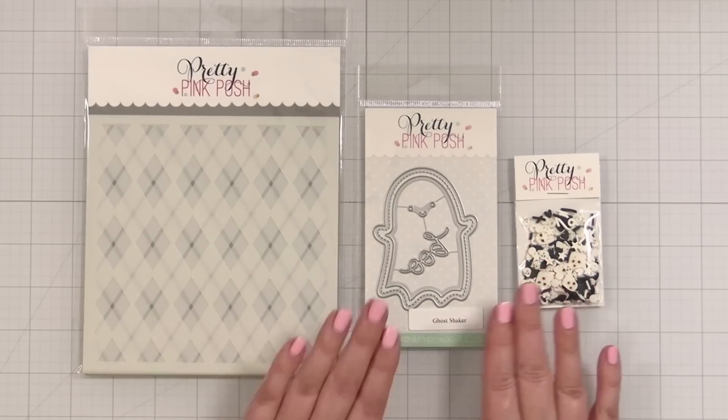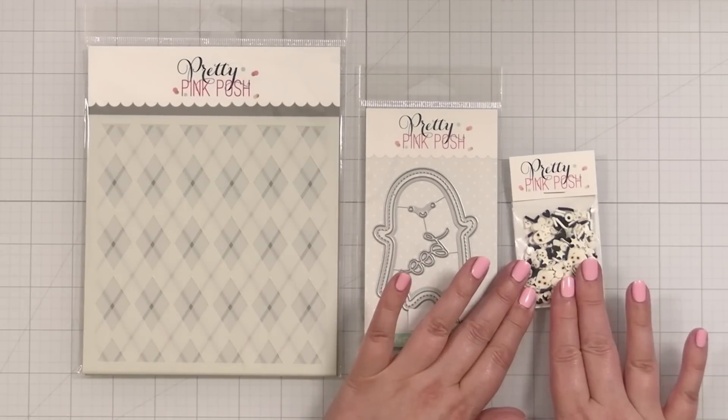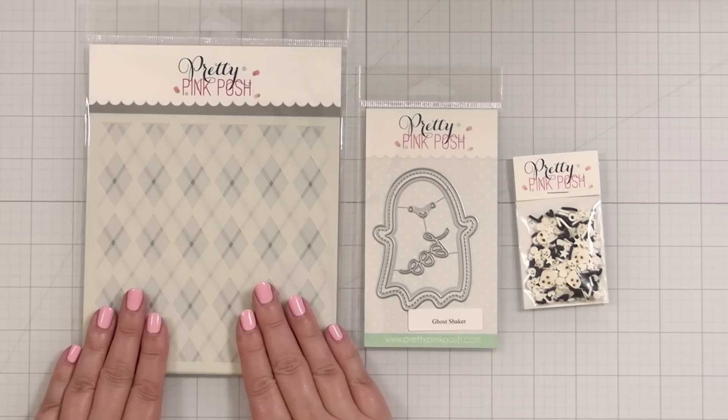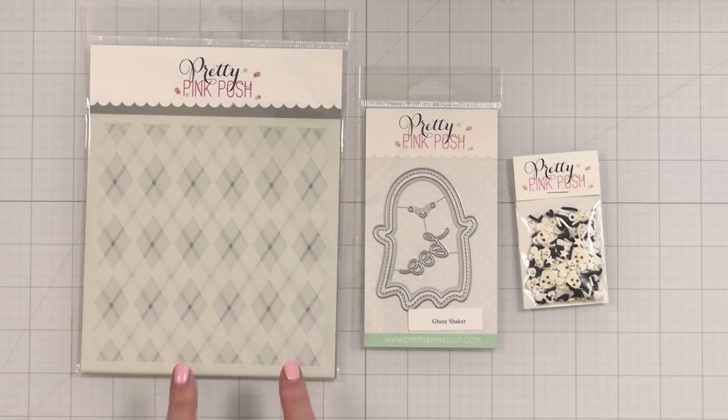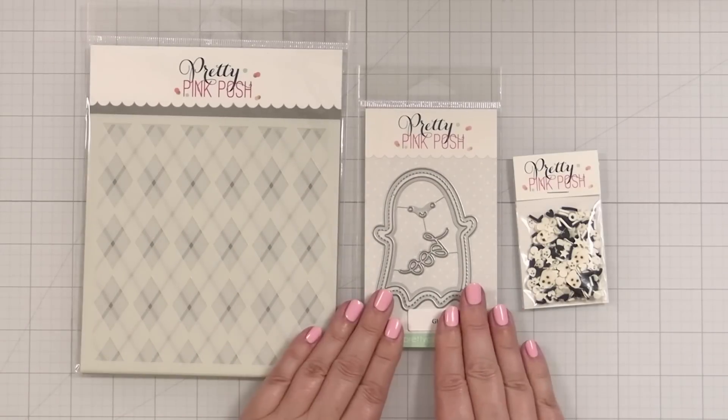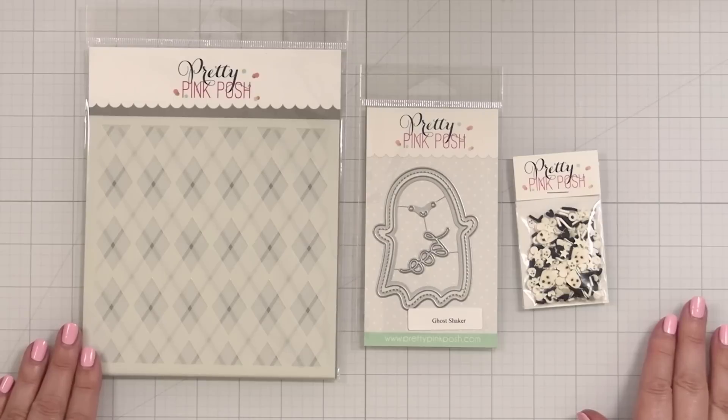So I got to make a shaker card. The fill is going to be like that, and the colors on the Argyle, we're going to go with a classic Halloween triad.